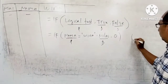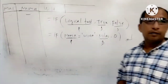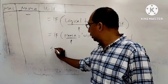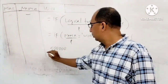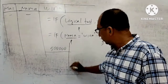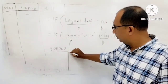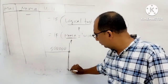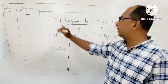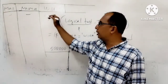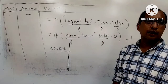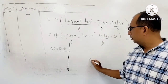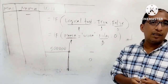Kemudian enter. Hasilnya apa? 500 ribu kan? Di sini akan muncul 500 ribu. Arahkan mouse ke sudut, di sini, kemudian tarik ke bawah. Sehingga nanti akan muncul yang hanya namanya Wina yang akan muncul nilai uangnya, yang lainnya strip atau 0. Paham ya? Paham.